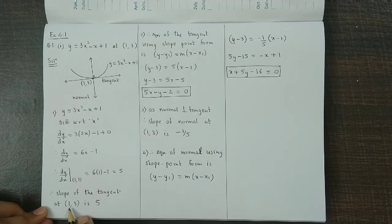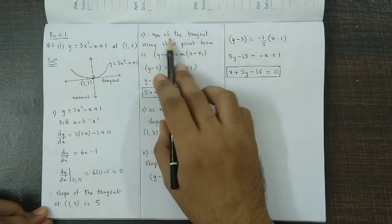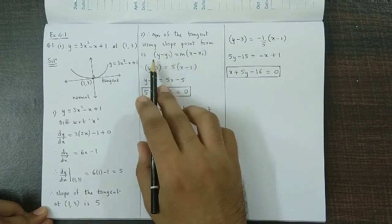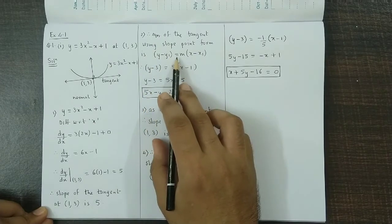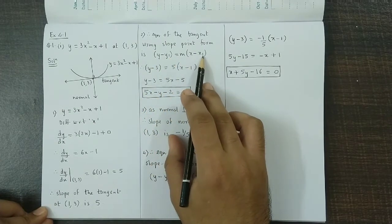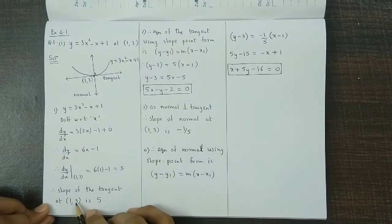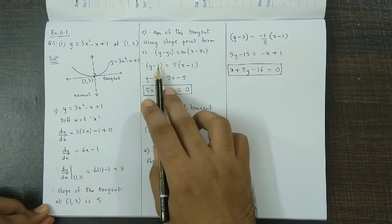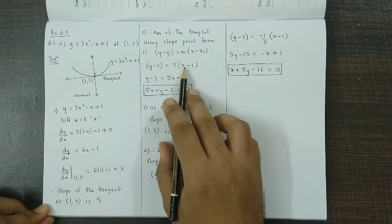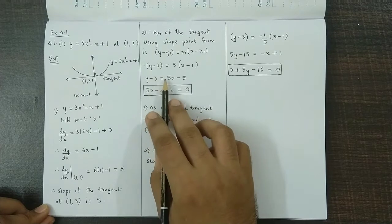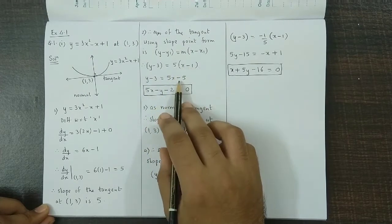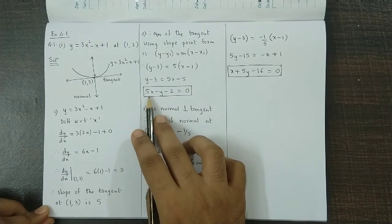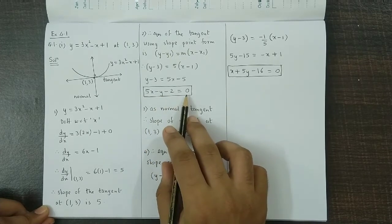We have the slope and we have the point, so we can obtain the equation of the tangent using the slope-point form: y - y₁ = m(x - x₁). Here x₁ = 1, y₁ = 3, and m = 5. Substituting, we get y - 3 = 5(x - 1), which gives y - 3 = 5x - 5. Rearranging, the equation of the tangent is 5x - y - 2 = 0.